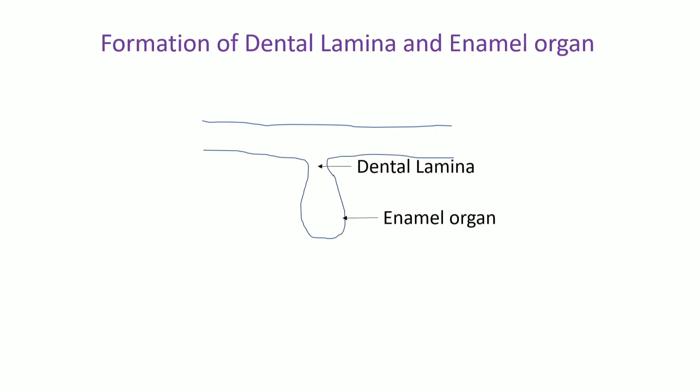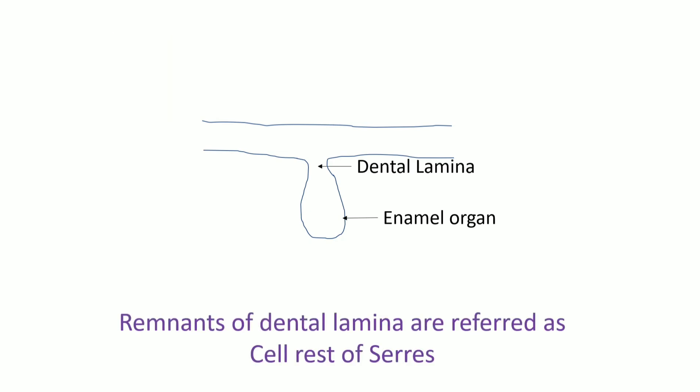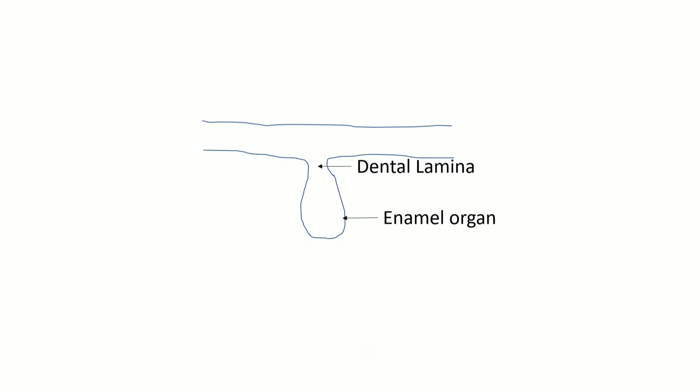Bud stage. In bud stage, the shape of enamel organ resembles a bud shape. The dental lamina is formed at the seventh week of gestation. The downgrowth from the dental lamina is the enamel organ. Remnants of dental lamina are referred to as cell rests of Serres, and these are perceived as epithelial rests.